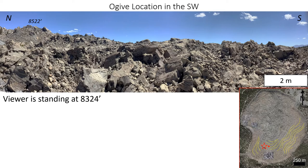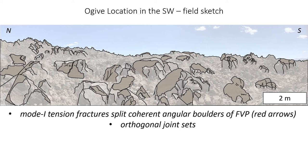This image shows a cross-section through the ogives in the southernmost portion of Obsidian Dome; the location is indicated by the red star in the inset map. Like the first image we saw, this shows a highly brecciated surface of finely vesicular pumice with large boulders being cut by fractures and infills of talus. Creating a digital field sketch and overlaying it on the photo allows us to zoom in on specific morphologies and structures. Looking to the north at the horizon, you can see the gently undulating surface detected by aerial imagery. Orthogonal joint sets cut the large coherent boulders of finely vesicular pumice, which have then been split by mode 1 tension fractures.